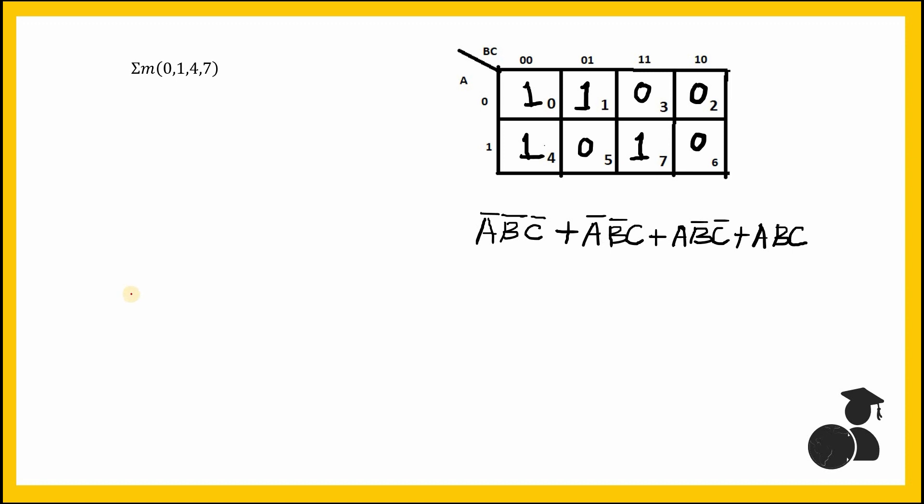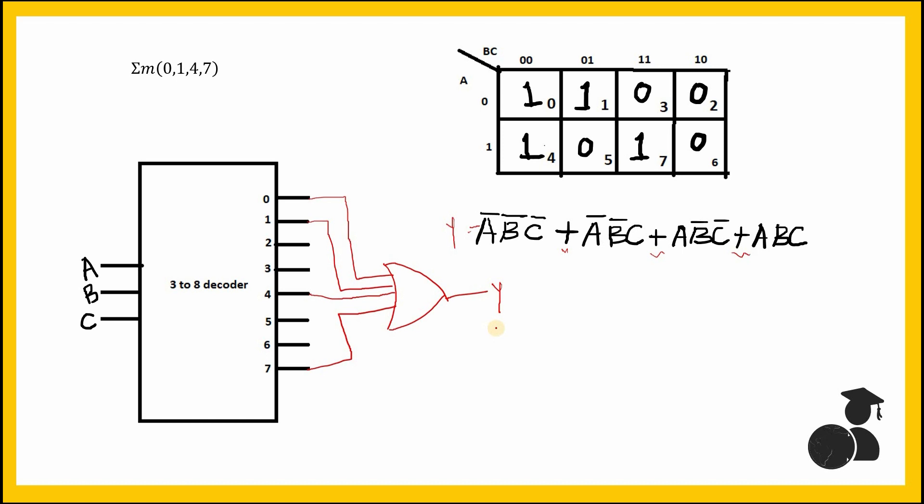Remember that in the first slide we saw that decoder outputs are nothing but minterms. So implementing an SOP function using decoder is very simple. Since our expression has a maximum of 8 minterms, since it's an expression of 3 variables, we need to use a 3-to-8 decoder. And the input of the decoder are the inputs of our function A, B, and C. And as we know, the output of decoder represents the minterms for this 3-variable function. Since we already have got minterms at the output of decoder, the only thing that's left to do is to OR those minterms to get your output expression. So we need to OR 0, 1, 4, and 7 terms to get your output. The output of the function is now represented by this Y obtained by ORing 0, 1, 4, and 7.